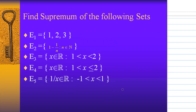I am going to show you how to visualize the supremum of the following five sets. E1 is a set that consists of 1, 2, and 3. E2 is a set that consists of 1 minus 1 over N, where N is a natural number. E3 consists of all the real numbers from 1 to 2, excluding the endpoints. E4 consists of all the real numbers from 1 to 2, excluding 1. E5 consists of all the real numbers 1 over x, where x is between minus 1 and 1.